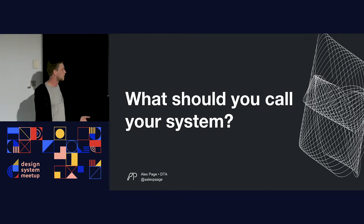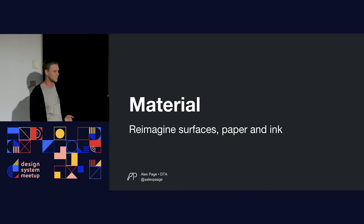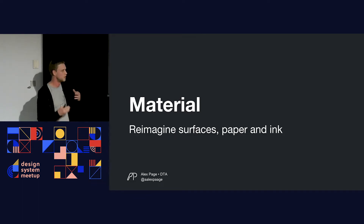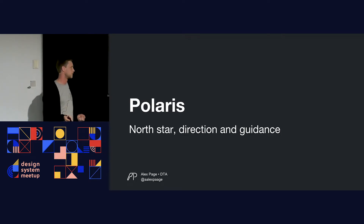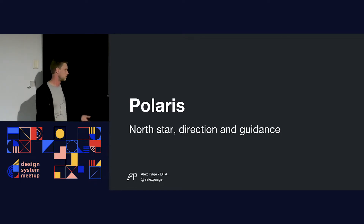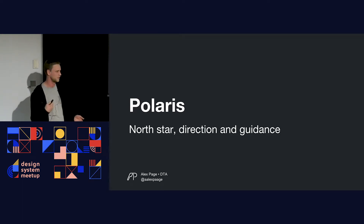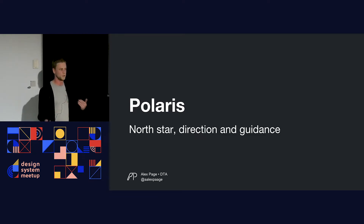So what should you call your design system? There are lots of great examples. Material Design reimagines surfaces, paper and ink — 'material' is physical, you can touch it, the shadows come through. Polaris is the Shopify design system — Polaris is literally the North Star, used by explorers for direction and guidance. As a designer or developer, you'd use the design system for guidance and direction as well.